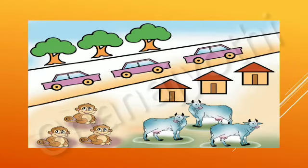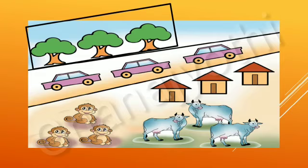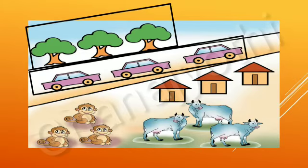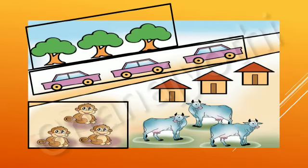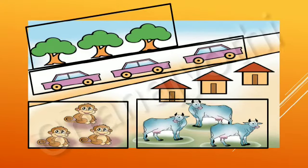Now, look at this picture. In this picture, name the things that are 3 in number. Observe carefully, students, and tell me the things that are 3 in number. There are 3 trees in this picture, 3 cars, 3 monkeys, 3 cows, and 3 houses.